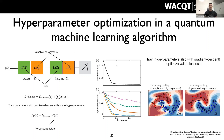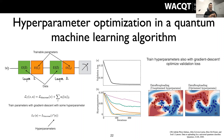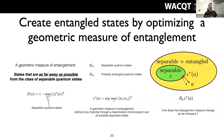We wanted one more result. We tried error mitigation, optimal control, and other things, but kept hitting dead ends. Nathan suggested looking at entanglement, because there's a measure of entanglement that looks like an implicit function — the geometric measure of entanglement.